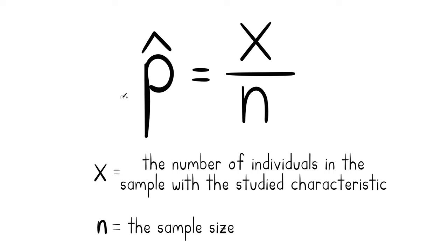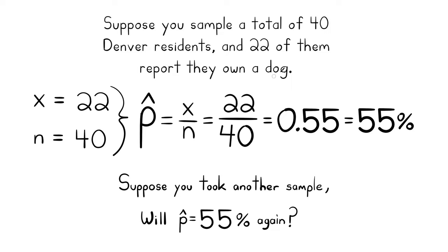To find a sample proportion you need two numbers: a count of how many individuals in your sample have a certain characteristic — sometimes called X — divided by the size of your entire sample, called N. For example, suppose you sample 40 Denver residents and 22 of them report they own a dog. That gives a sample proportion of 55 percent.